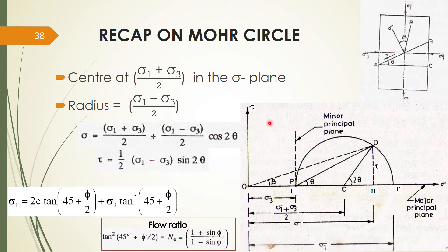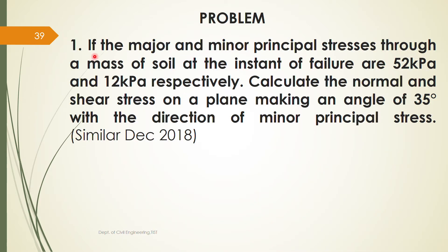Now we will consider a problem. If the major and minor principal stresses through a mass of soil at the instant of failure are 52 kPa and 12 kPa respectively, calculate the normal and shear stress on a plane making an angle of 35 degrees with the direction of the minor principal stress. A similar question was asked in the university exam conducted in December 2018.